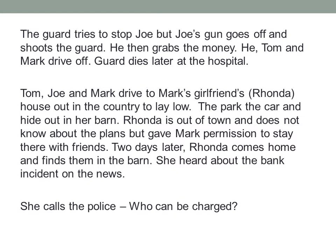The guard tries to stop Joe, but Joe's gun goes off and he shoots the guard. Joe grabs the money and they drive off. The guard dies later at the hospital. Tom, Joe, and Mark drive to Mark's girlfriend Rhonda's house in the country to lay low, parking the car and hiding out in her barn. Rhonda is out of town and doesn't know about the plans but gave Mark permission to stay there with friends. Two days later Rhonda comes home, finds them in her barn, hears about the bank incident on the news, and calls the police. The question is: who can be charged and for what?